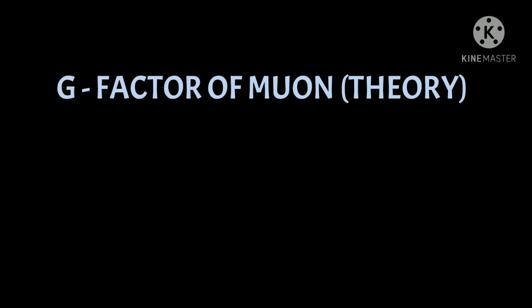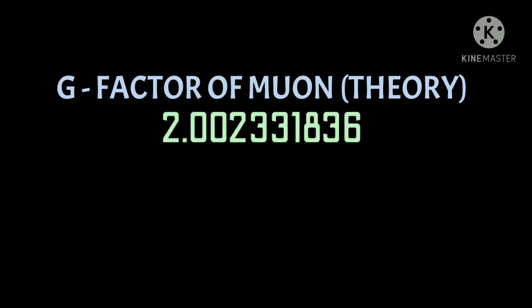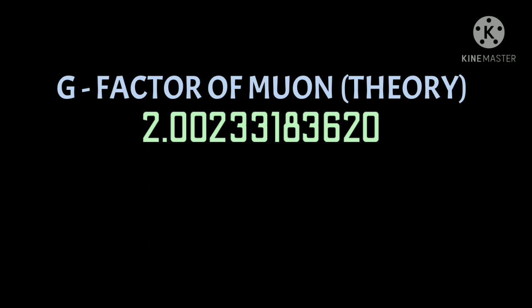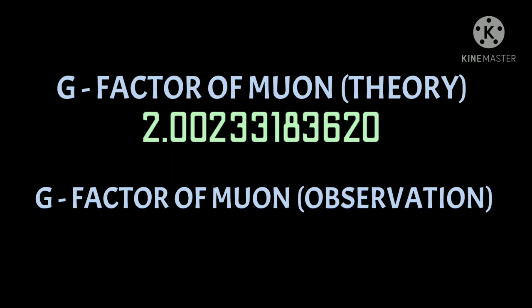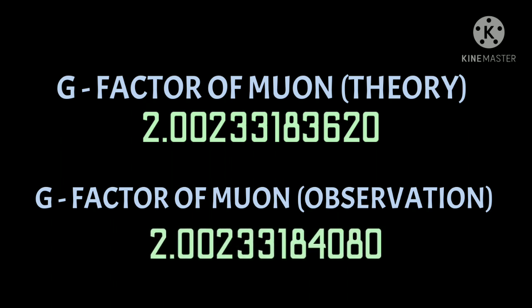Theories predict the g-factor of the muon to be 2.00233183620, and the g-2 experiment has observed the g-factor of the muon to be 2.00233184080.